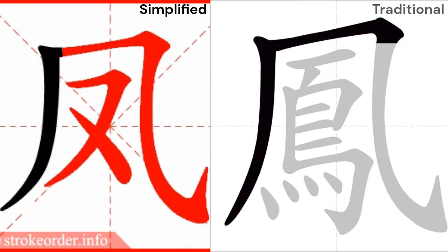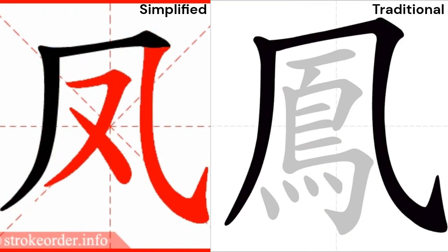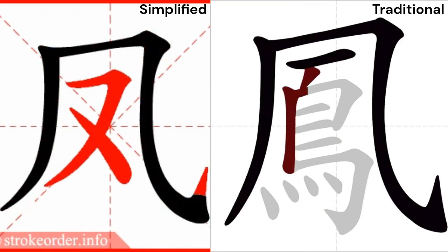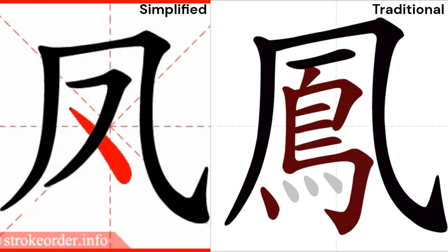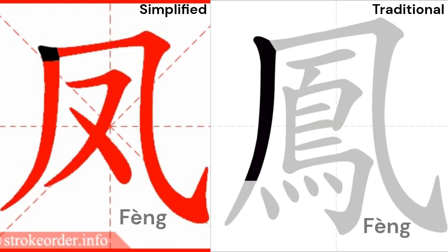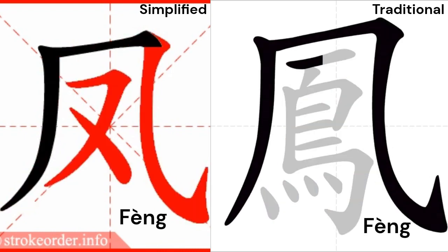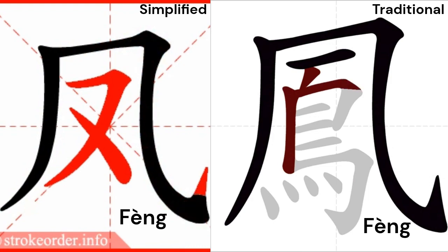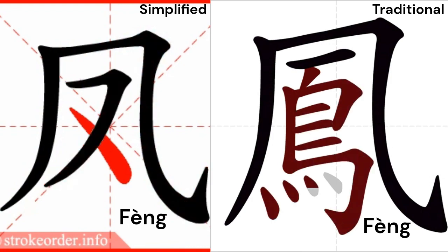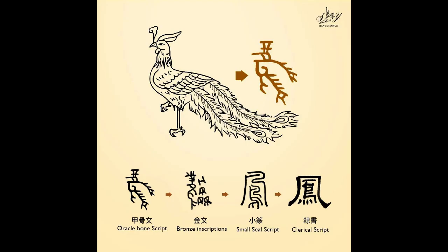In today's video we'll teach you the Chinese character for phoenix. The pronunciation is 'feng.' This is a fun character in the Chinese language because the traditional character originally looked like a phoenix, that gradually morphed into its modern form.